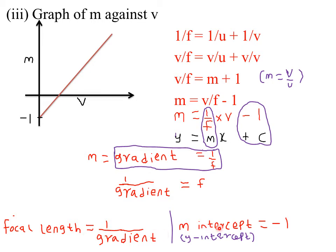The m-intercept — that is the magnification intercept or y-intercept — will always be equal to negative 1. So whenever you are drawing this graph, if the experiment is accurate enough, we expect the graph to cut the m-intercept at −1. The gradient of the graph gives a straight line, and the reciprocal of that gradient must equal the focal length.